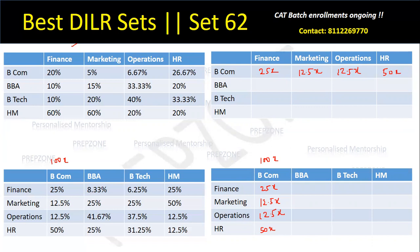Now I know that only 20% of Finance students were from BCom. Which means 25X is nothing but 20% of the Finance total. The smart approach is: if 20% is 25X, then 10% is just half of it — so I'll directly put 12.5X here, and this will also be 12.5X. And if 20% is 25X, then 60% has to be three times of it, so it has to be 75X. I can simply put these values in the Finance row: 12.5X, 12.5X, and 75X.